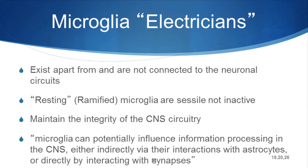Microglia move into their sessile state in the adult brain, where they're sitting and monitoring. They exist apart from the neuronal circuits. Ramified is the correct term for a resting microglia. They are searching their environment, constantly doing little repair and clean-up work on the dendrites and neurons in the region, maintaining the integrity of the CNS circuitry. They can potentially influence information processing in the central nervous system either indirectly via their interactions with astrocytes, or directly by interacting with synapses.